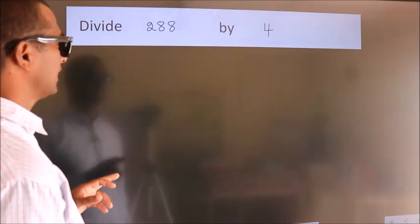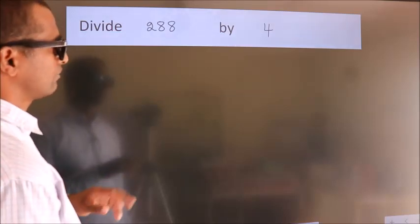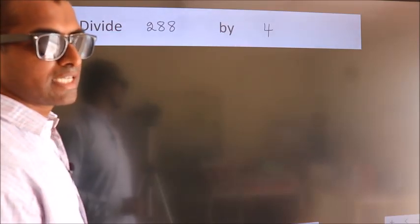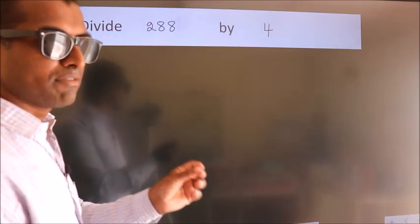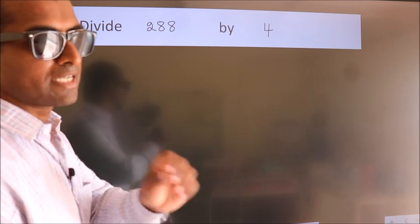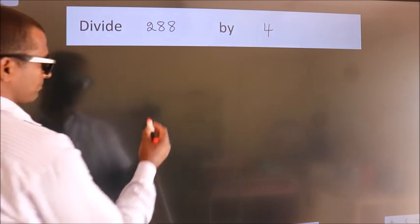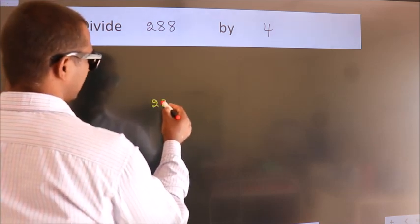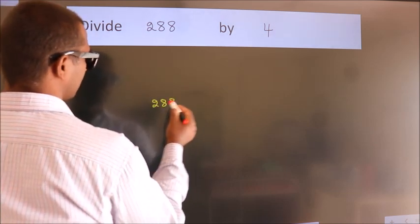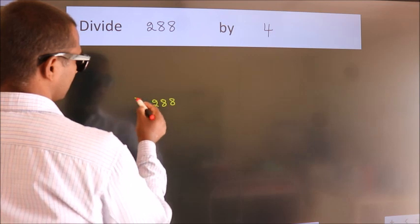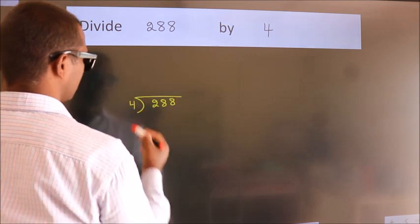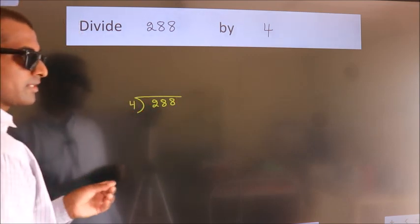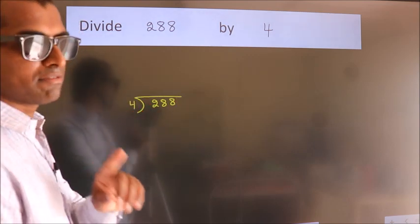Divide 288 by 4. To do this division, we should frame it in this way: 288 here, 4 here. This is your step 1.